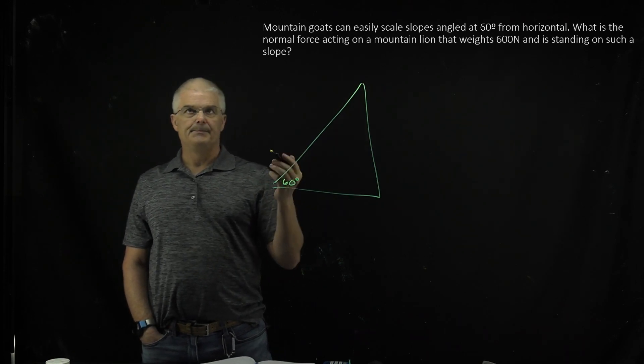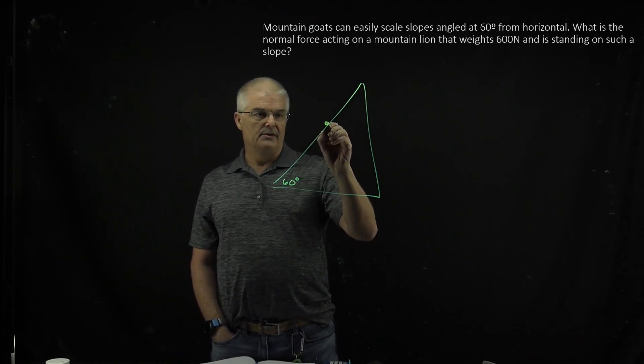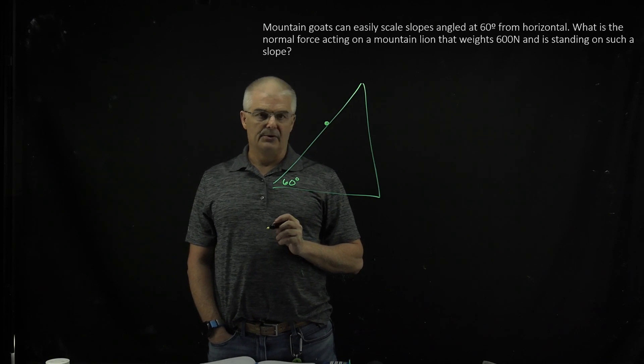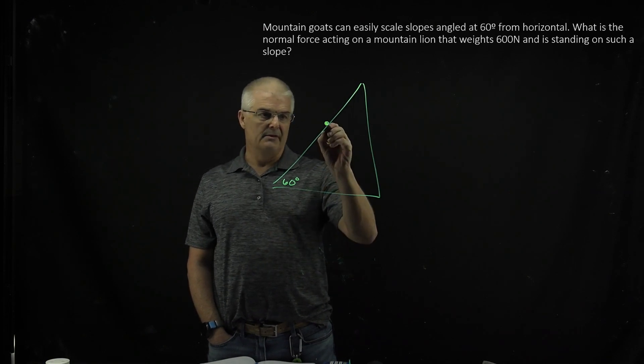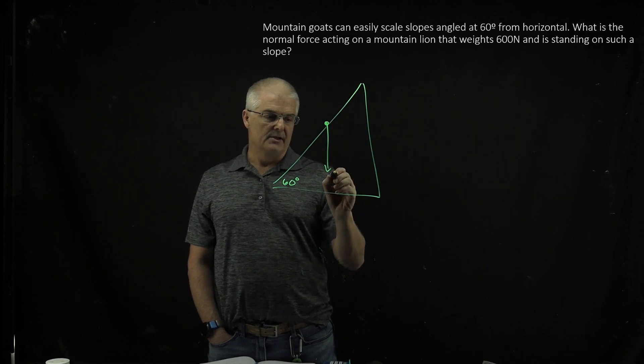When you draw a, I would call it a free body diagram, an FBD, we just draw a dot for our mountain goat. And the question, what's the normal force? Remember the gravity always pushes straight down. So the force of gravity equals 600 newtons.